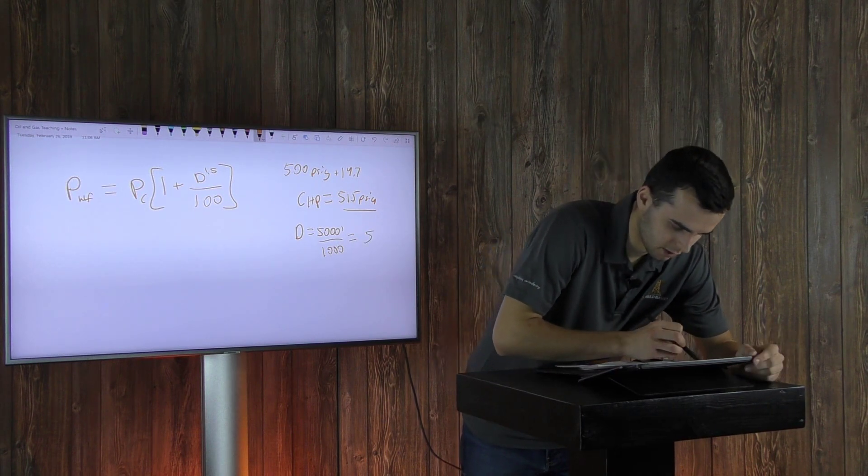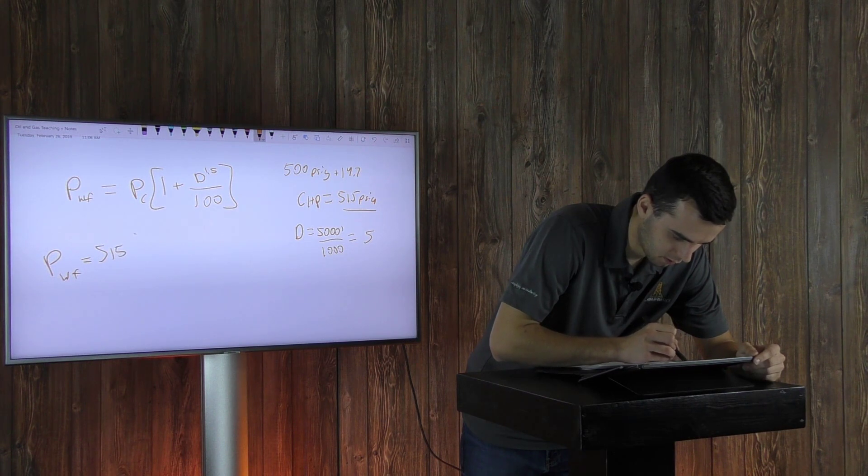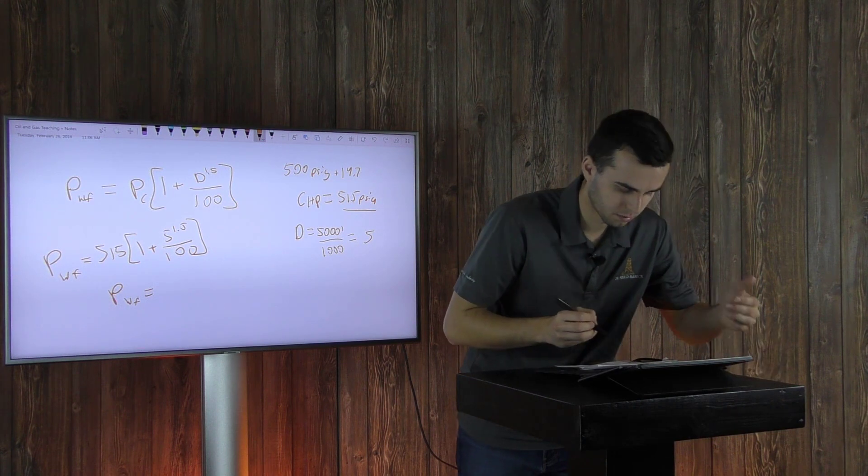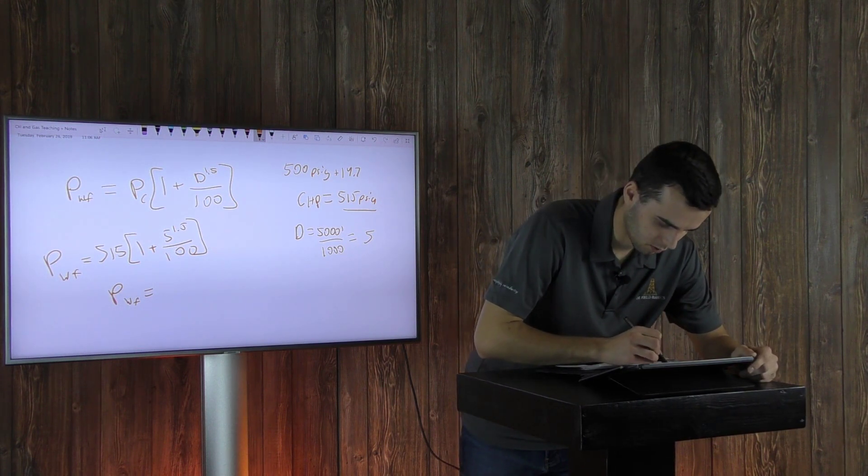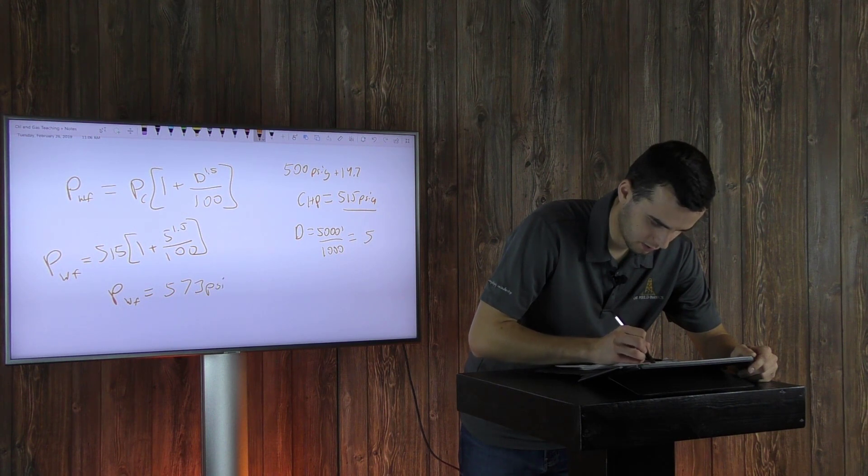So take a look at your equation. It's pretty simple. PWF equals 515 times 1 plus 5 to the 1.5 power divided by 100. Your PWF, your bottom hole flowing pressure, equals 573 PSIA.